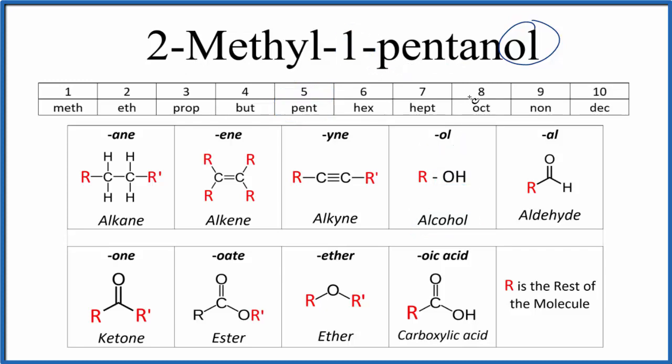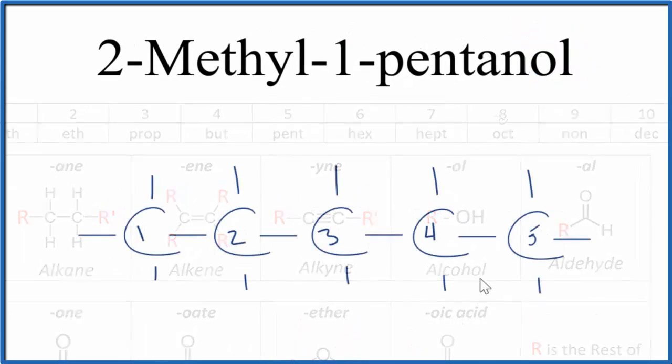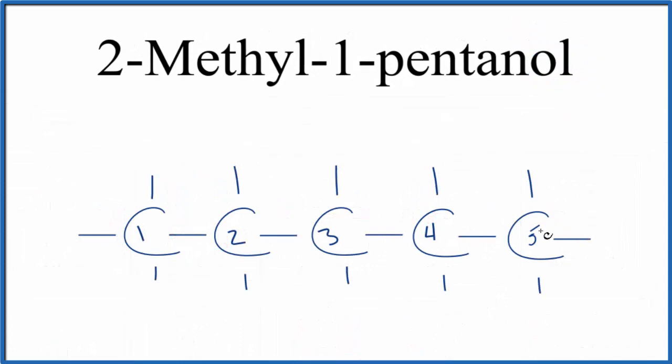So let's put a chain of five carbons up and number it. So right now we have five carbons, single bonded, and then all of these lines, they go to hydrogens. This is pentane, an alkane.